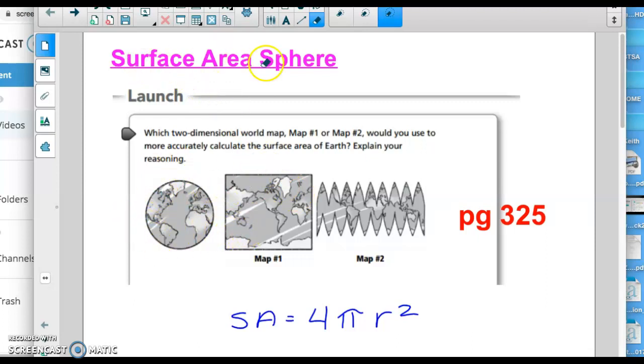We're going to start with surface area and in this same video we are actually going to do volume as well. So we're on page 325 in our books or just on a blank piece of paper. I want to point out right here, write this down, this is the formula for surface area of a sphere. That's the first one that we're going to do today, 4πr². So let's get to it.